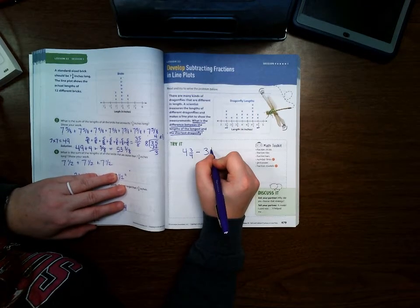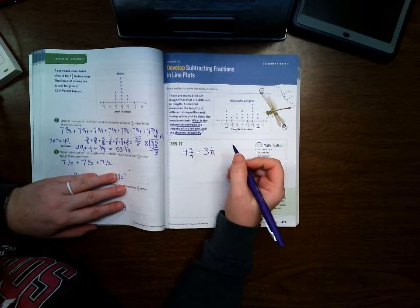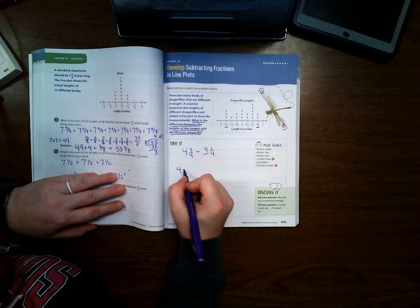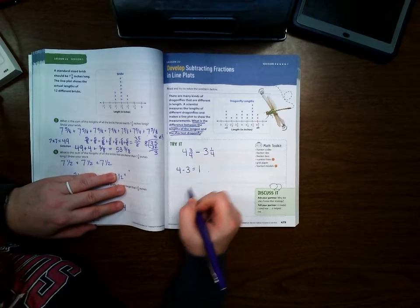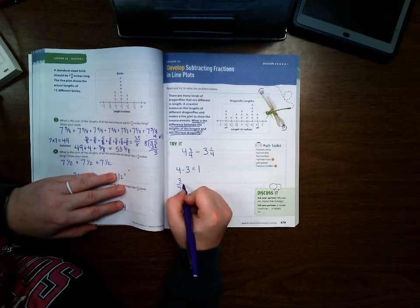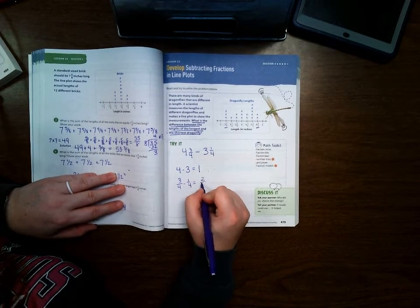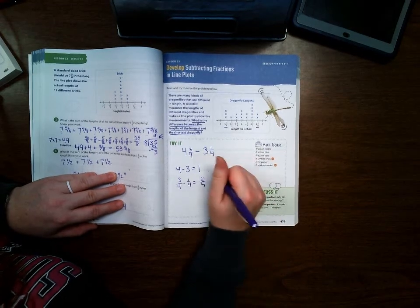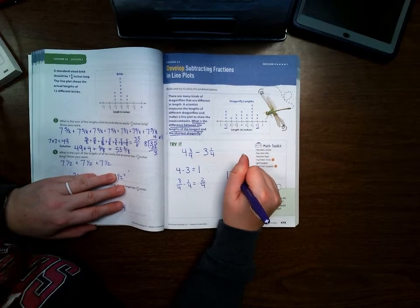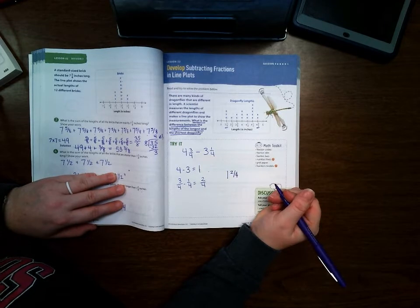First I'm going to do the 4 minus 3, which equals 1. And then I'm going to do the 3/4 minus the 1/4, which is 2/4. So my answer is 1 and 2/4 inches.